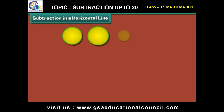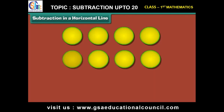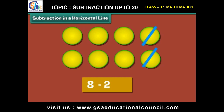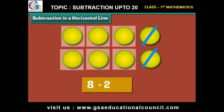To subtract two from eight, we place eight dots. Strike off two dots. Six dots remain. Therefore, six is the answer.